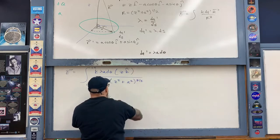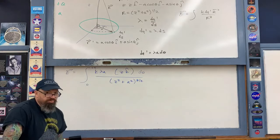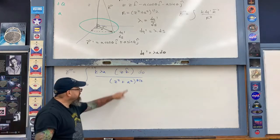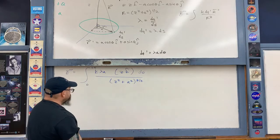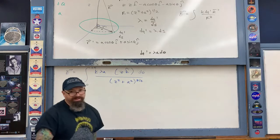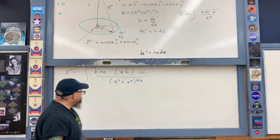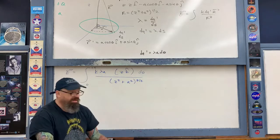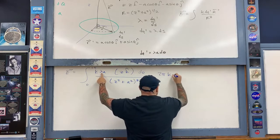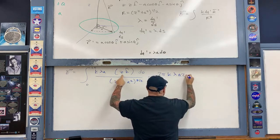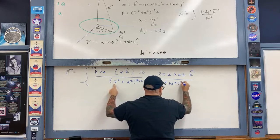Since we've shown the i-hat and j-hat portions of the integral are both zero, we only need to worry about the k-hat direction. All that remains in the integrand is the integral from 0 to 2π of d-theta — everything else is a constant. Integrating from 0 to 2π of d-theta simply gives 2π. So the result is 2π times k times lambda times a times z times k-hat, all divided by (z² + a²) to the three-halves power.